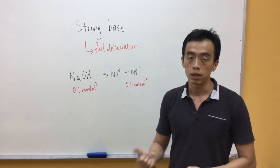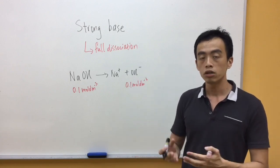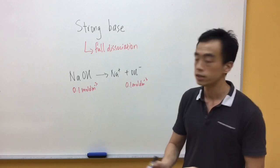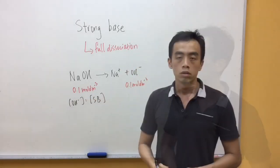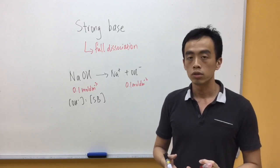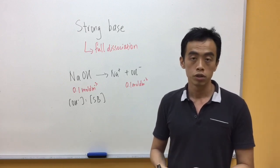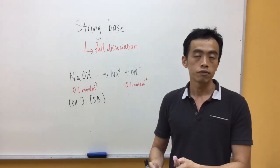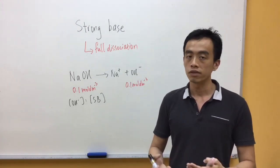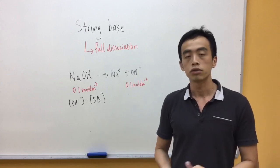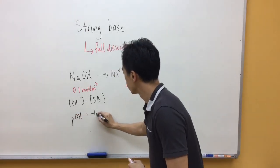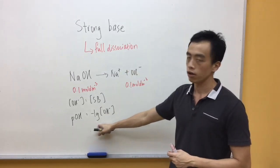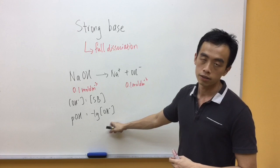Now how do I find the pH of this particular solution? We already know the concentration of OH minus, which equals the concentration of my strong base. So therefore the next thing we can do is determine the pOH of this particular solution. pOH is just a function of the concentration of OH minus in solution, given as the negative log of the concentration of OH minus.